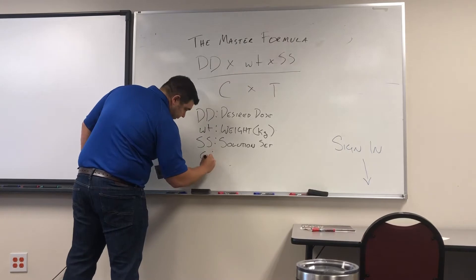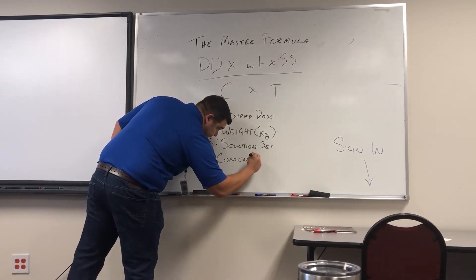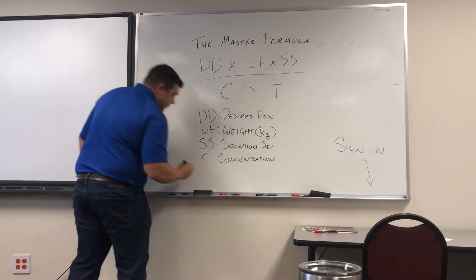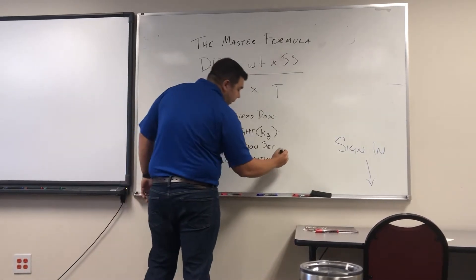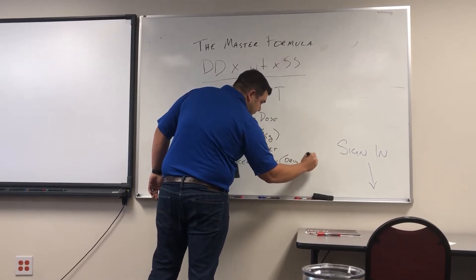And then C? Concentration. Concentration. And that's going to be per one ml. We're going to have to reduce that down to the amount of drug per one milliliter.